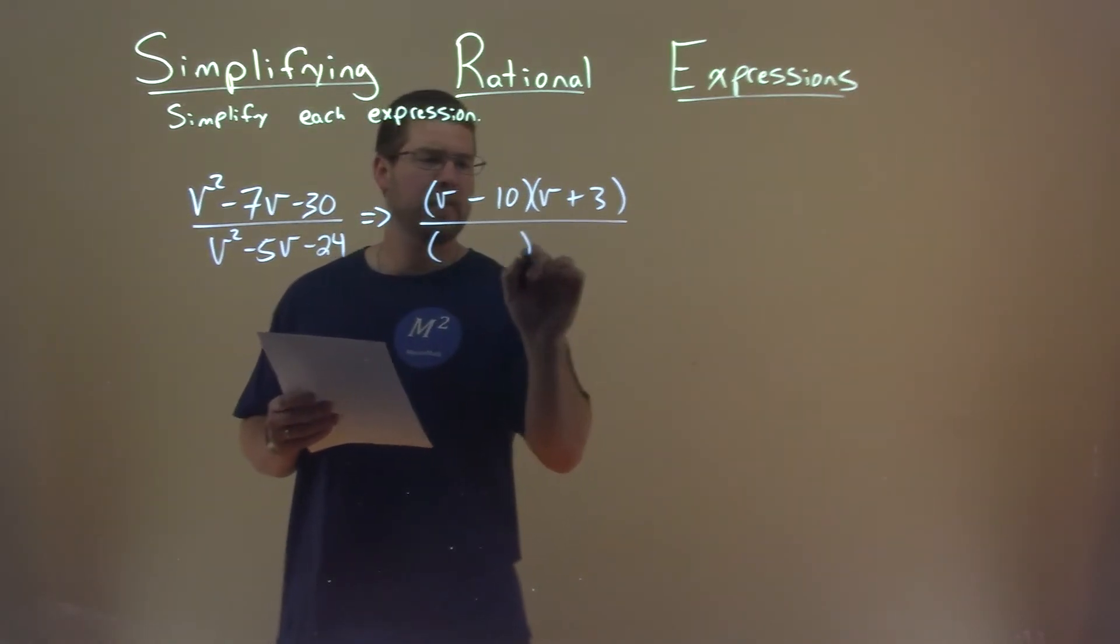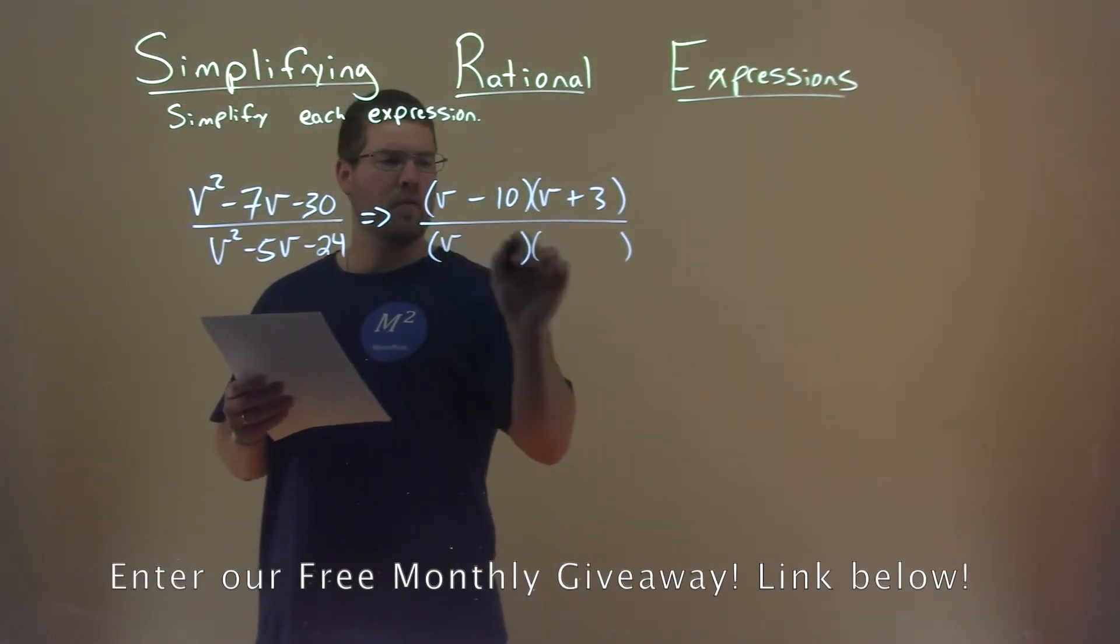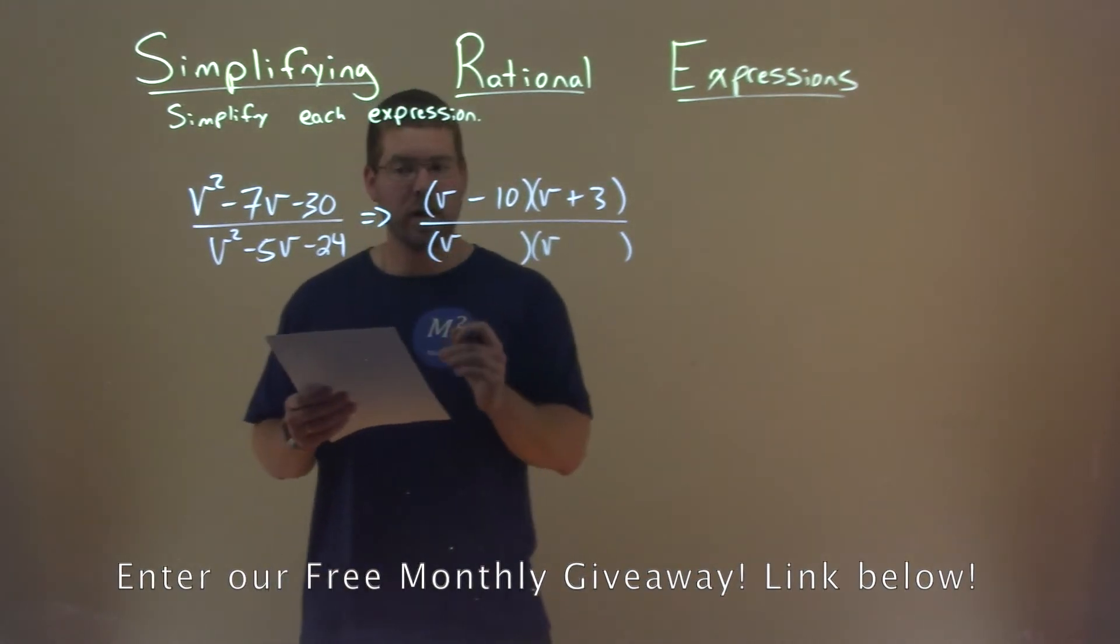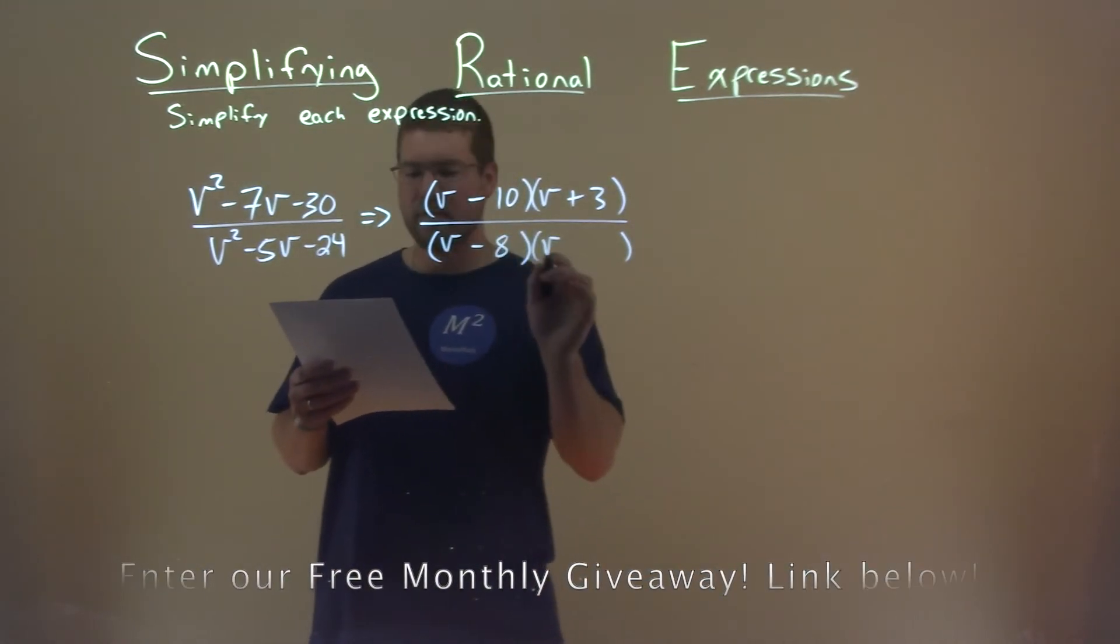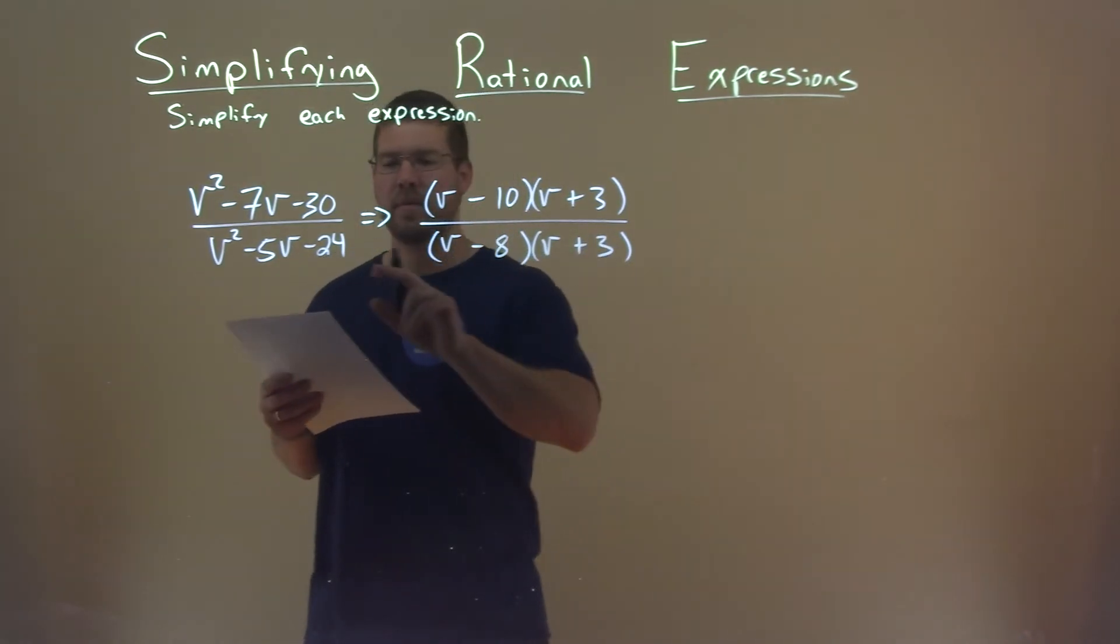Same thing with the denominator, this one can factor. So, we have our form here, v and v. What two numbers multiply to be negative 24 but add to be negative 5? And that's a minus 8 and plus a 3. Negative 8 times 3, negative 24. We add the 2, we get negative 5.